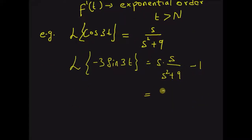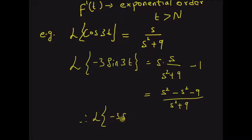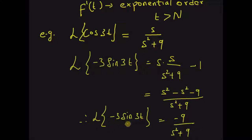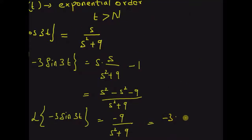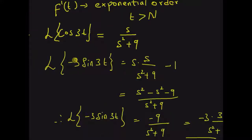Upon simplification, this becomes (s² − s² − 9)/(s² + 9). Therefore, the Laplace transform of −3·sin(3t), that is the derivative of cos(3t), is −9/(s² + 9). We can also easily verify this result by directly computing the Laplace transform of sin(3t): it is −3 multiplied by 3/(s² + 9), confirming the result.